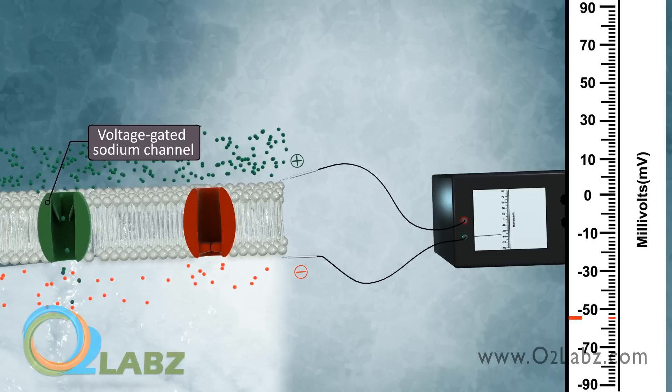Some voltage-gated channels open quickly, while others are slow to open, even though they may reach threshold at the same time. The speed at which they open causes significant changes in membrane potential.